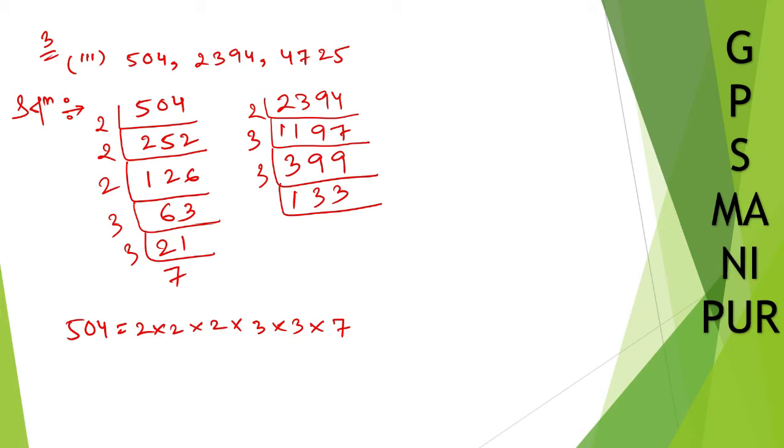By 7, can we divide by 7 or not? I think we can divide by 7. 7 into 133 gives 19. 19 is a prime number. So, 2394 is equal to 2 into 3 into 3 into 7 into 19.